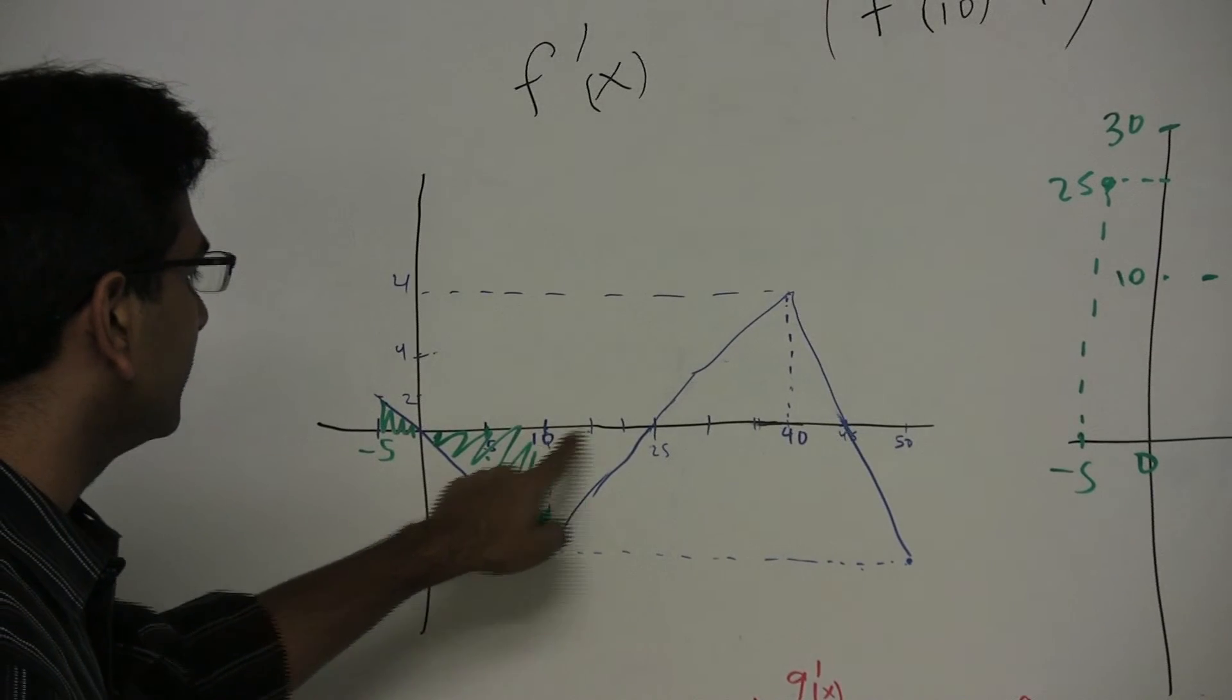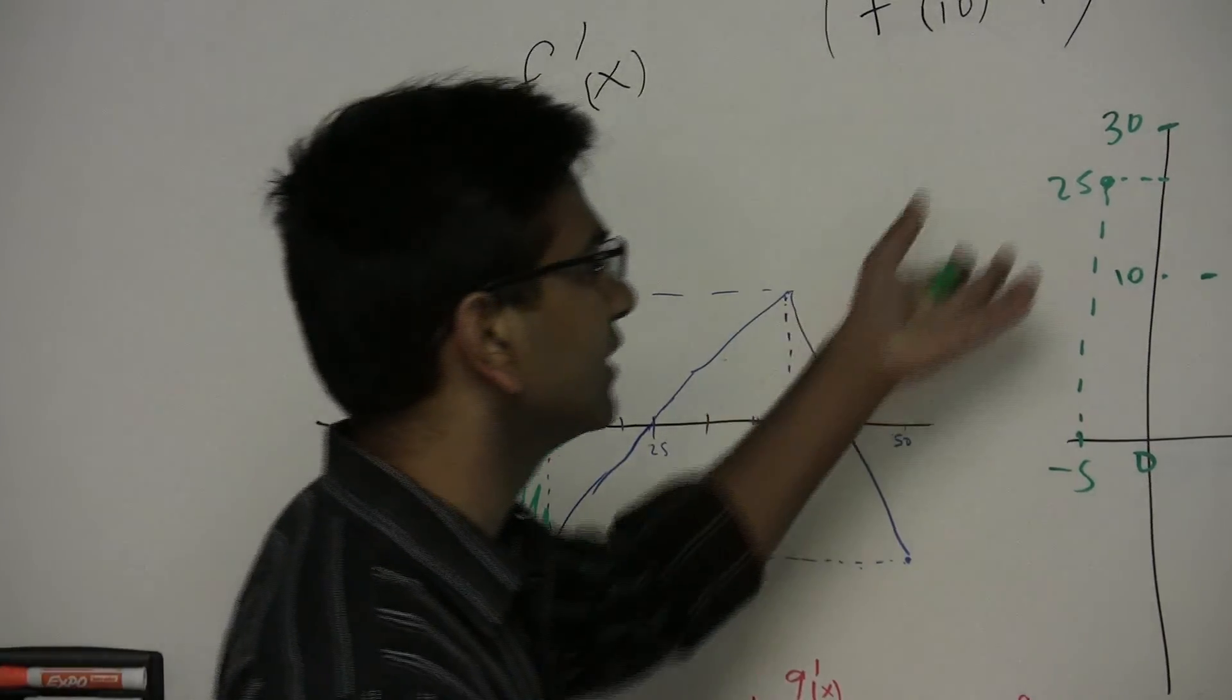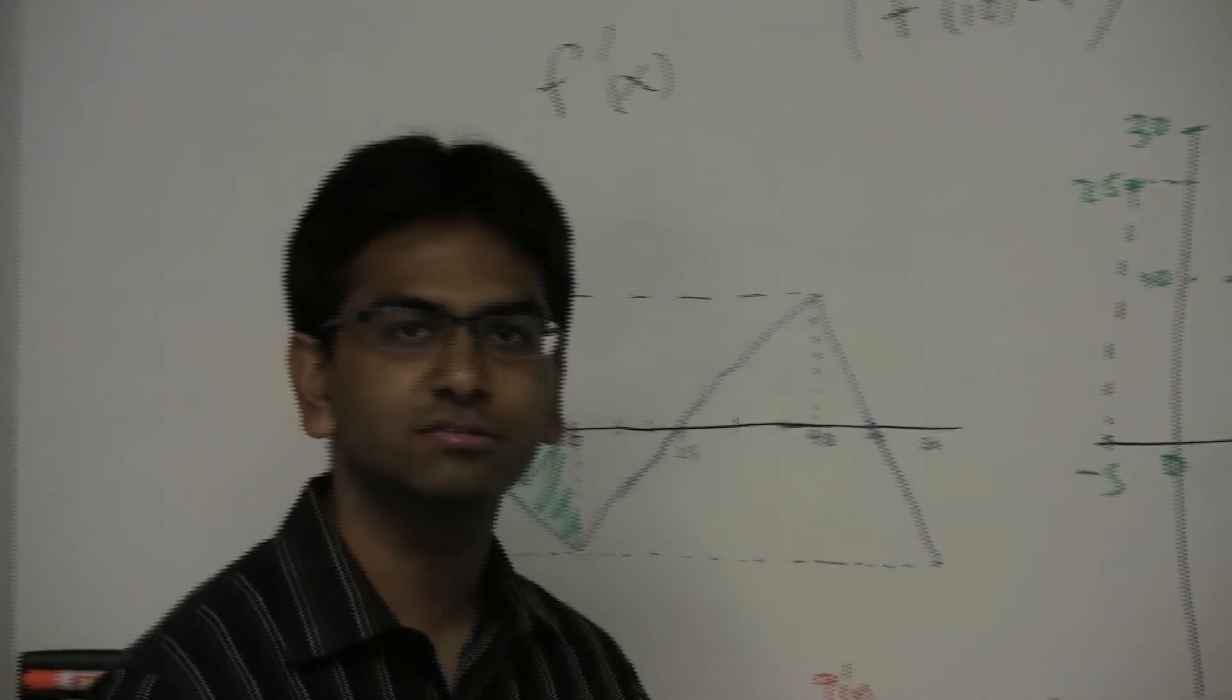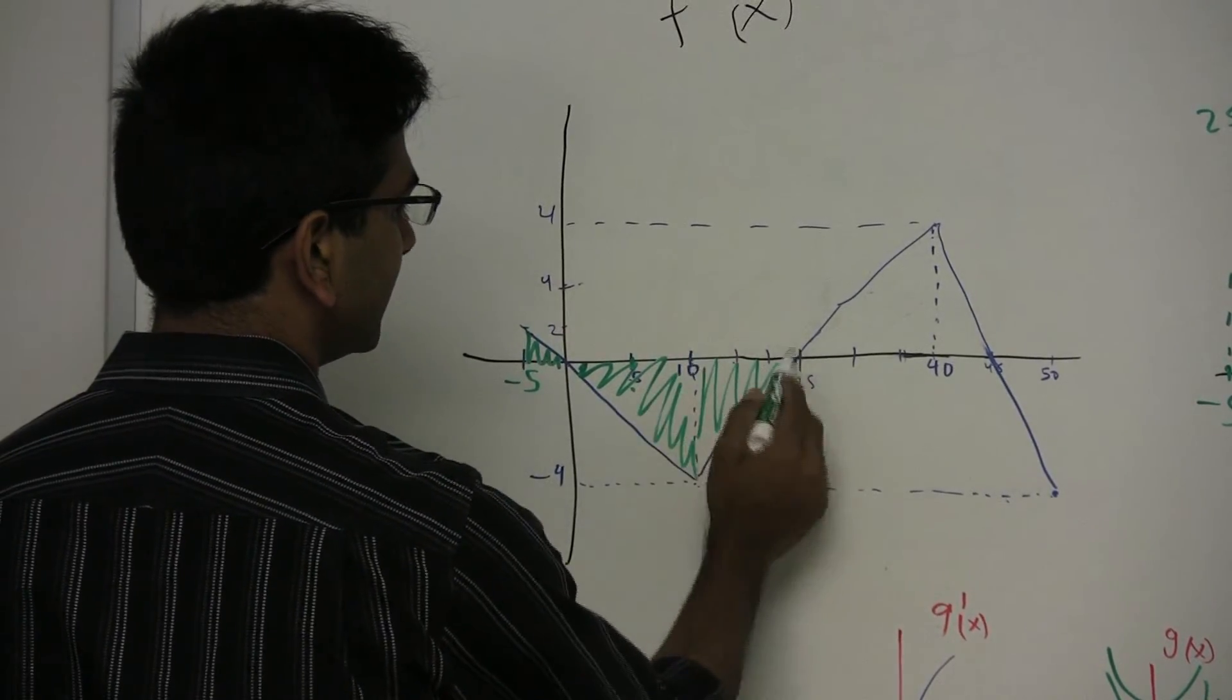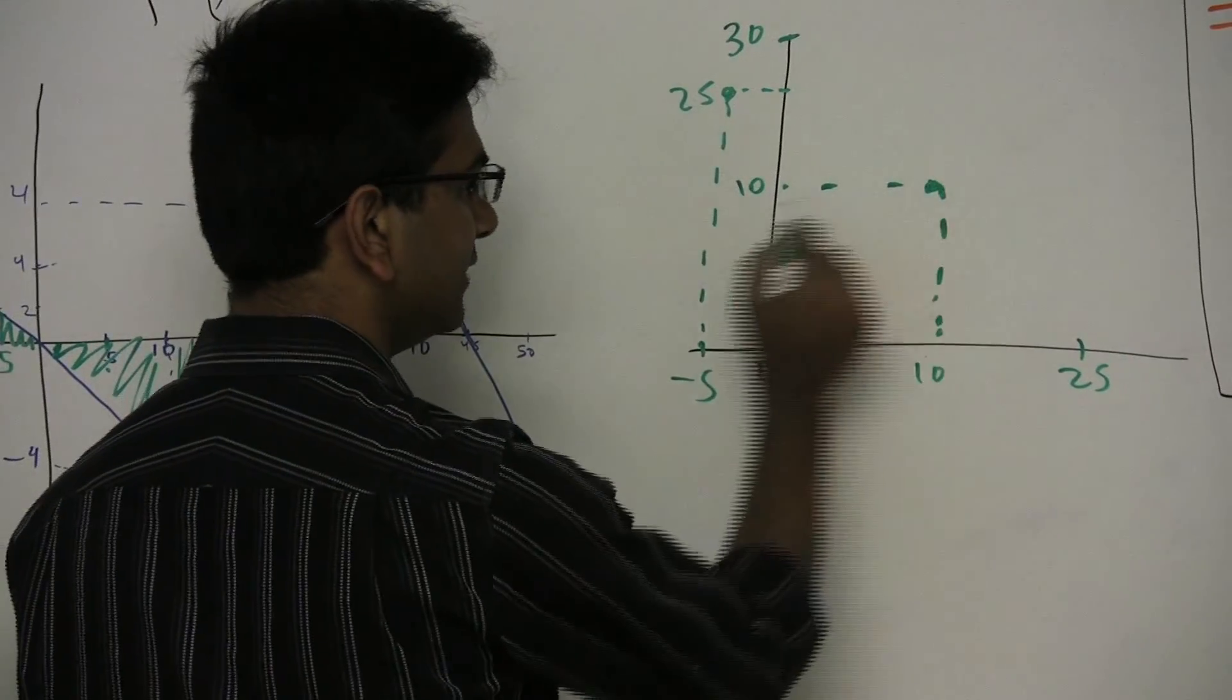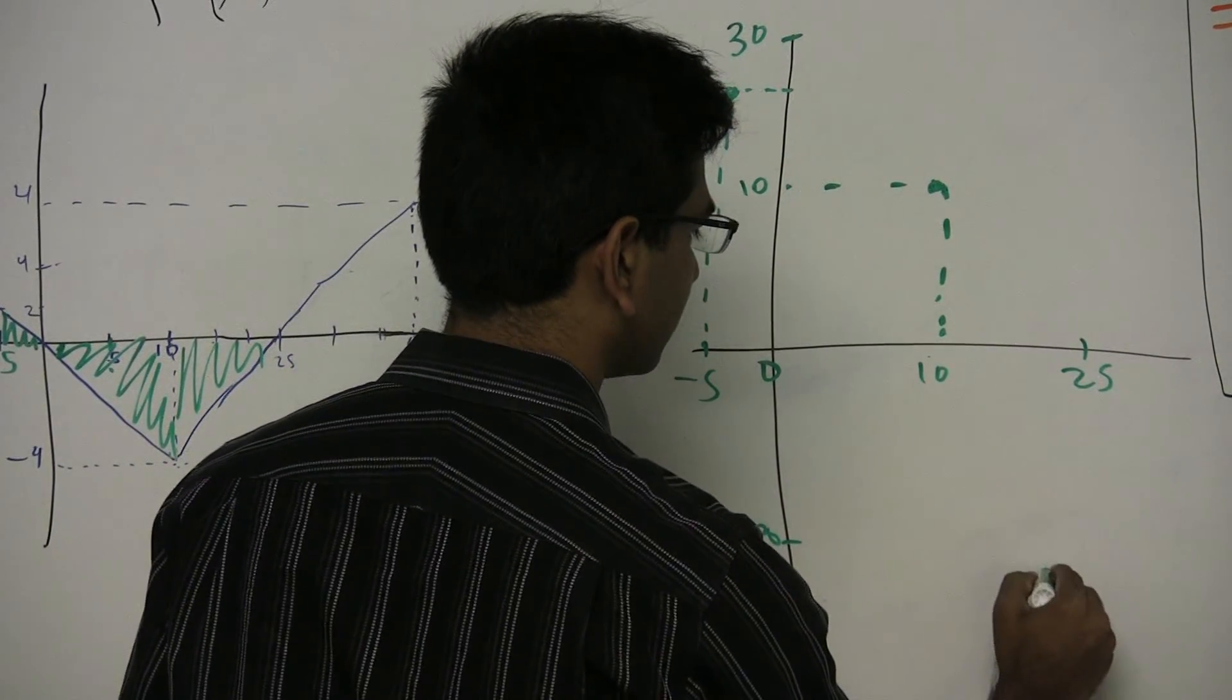Now let's look at the graph between 10 and 25. Well, between 10 and 25, it is negative. F prime is negative, so this guy is going to decrease. So over here, between 10 and 25, it's going to decrease, but we don't know what it's going to decrease down to. How much is it going to decrease by? So the area over here is 15 times 4, 60, divided by 2, which is 30. So it will go down by 30 units. So if it's at 10, going down by 30 units will make it down to negative 20. So at 25, the graph will be at negative 20.